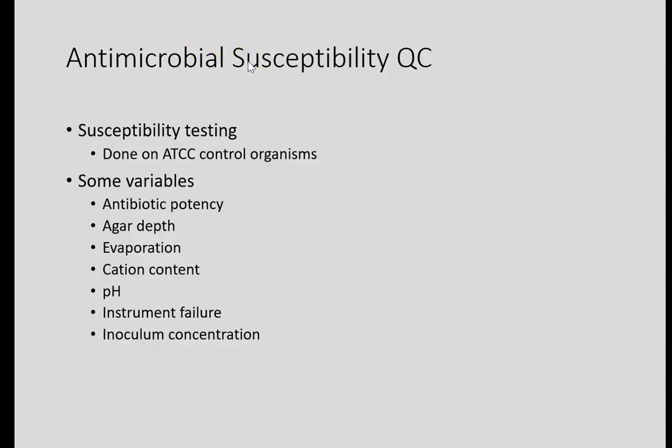Antimicrobial susceptibility QC is pretty interesting. You have control organisms from microbiologics or ATCC, and each individual organism has its own ATCC number and its own reaction patterns to certain things. You can have 15 different Staphylococcus aureuses and they'll have different antibiograms. One might be susceptible to penicillin and resistant to oxacillin, while the next might be susceptible to all the penicillins and resistant to erythromycin.